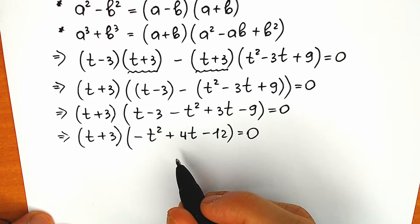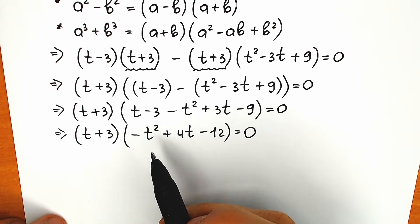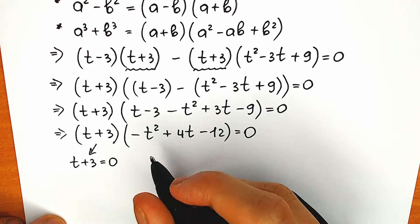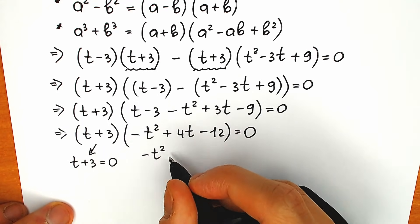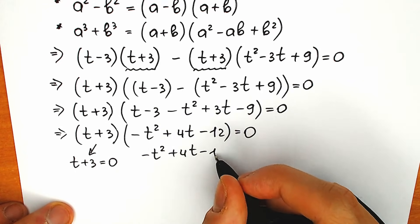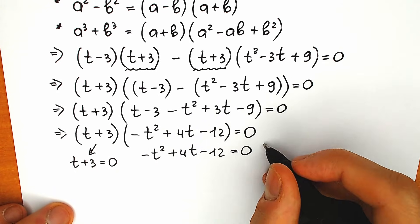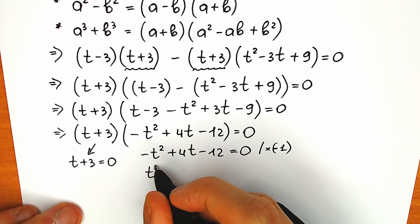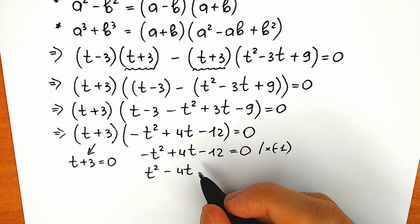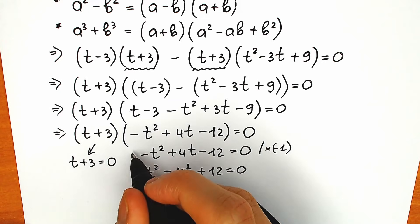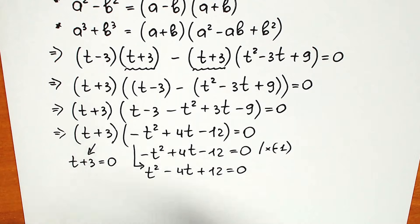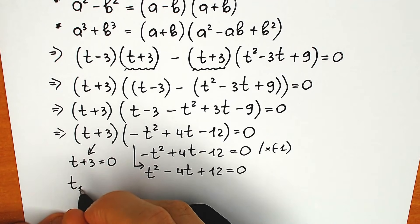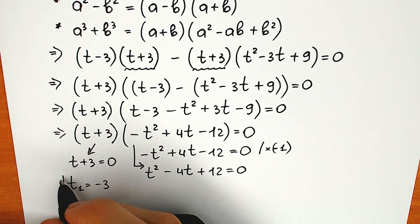A product of two parentheses equals zero when one parenthesis equals zero. First branch: t plus 3 equals zero, so t₁ equals minus 3. The second branch is the quadratic equation t squared minus 4t plus 12 equals zero.